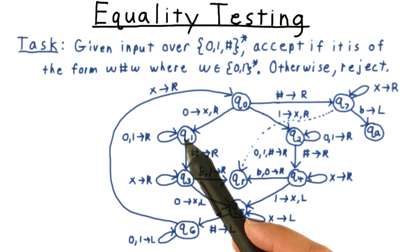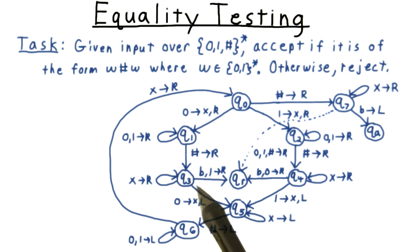We move past the rest of the first string to the hash, and then passed any xed out symbols to the next either a 0 or a 1. Actually, if we encounter a blank, that means that the second string was too short, and we can reject immediately.